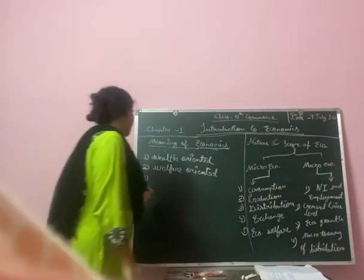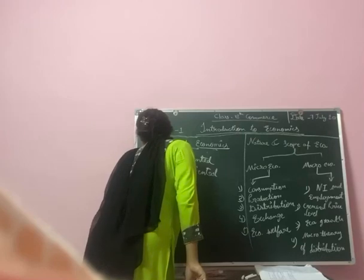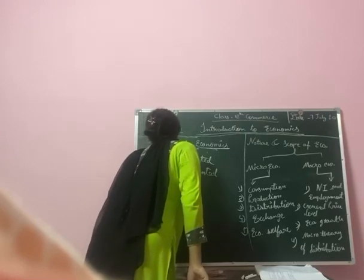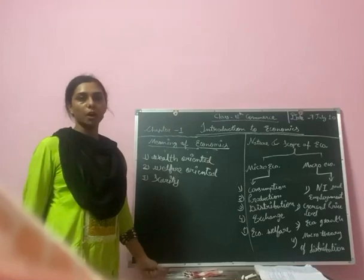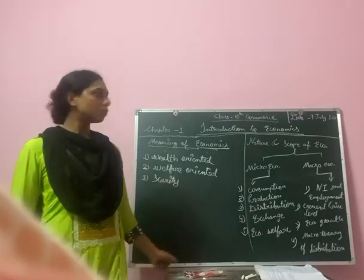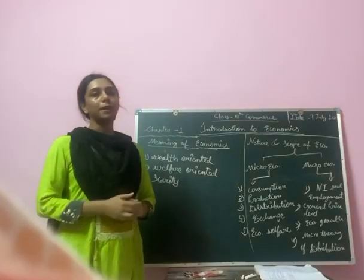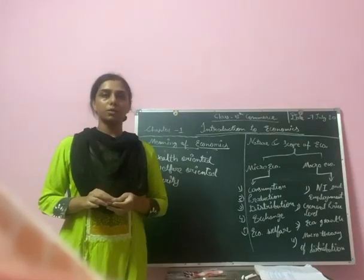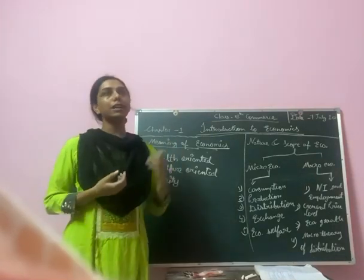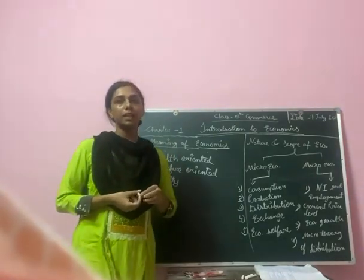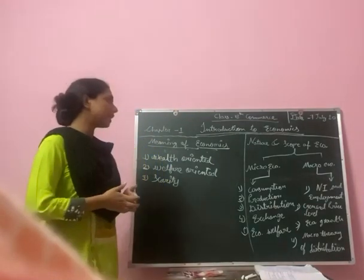The third definition is the scarcity definition, given by Robbins. According to Robbins, a person will create a hierarchical process in prioritizing their needs, ranging from psychological needs and other needs that must be fulfilled in order of priority.